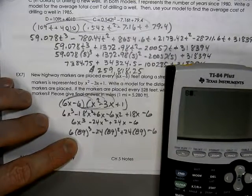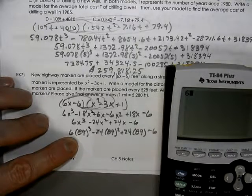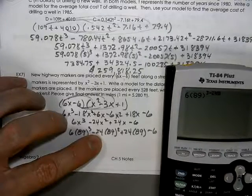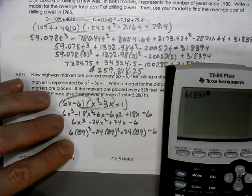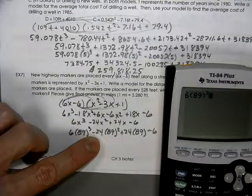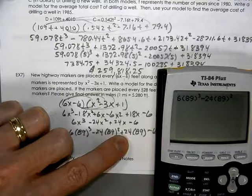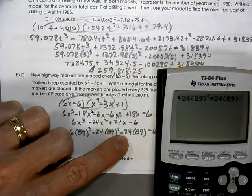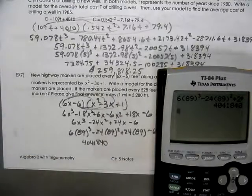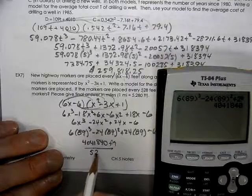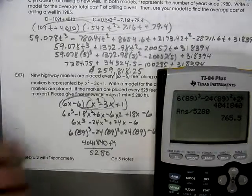Now we're going to plug our 89 into this mess. So we'll take our calculator and say 6 times 89 cubed minus 24 times 89 squared plus 24 times 89 minus 6. So that's the total feet and if we divide that by 5,280 which is the feet in a mile, we find out that we're going to be traveling over 765 miles.